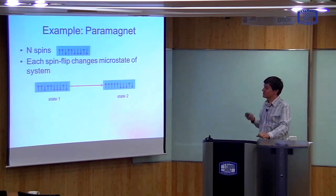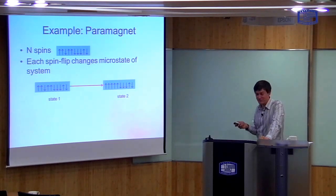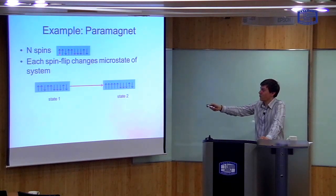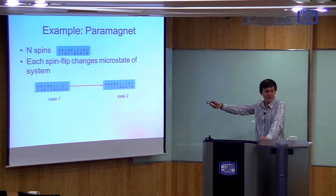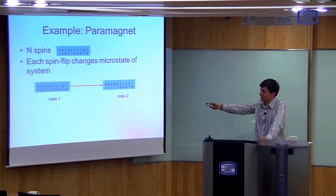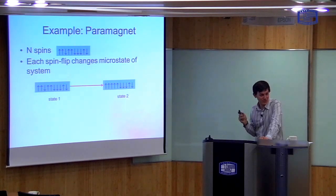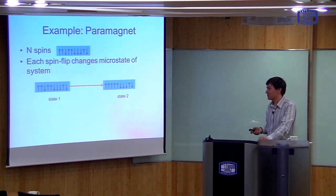In this case, the microstate of this system is defined by telling you what every arrow in the system is doing. So I say the first arrow is up, second arrow is up, third arrow is down, fourth arrow is up. That's a microstate — I tell you exactly what the system is doing.